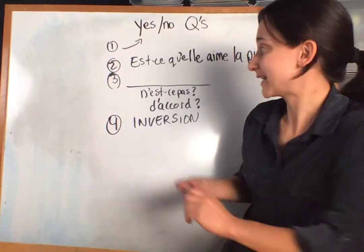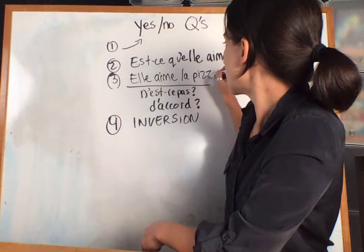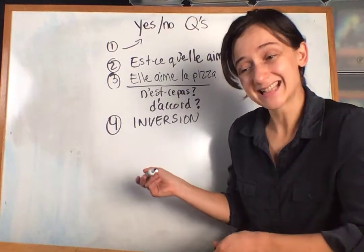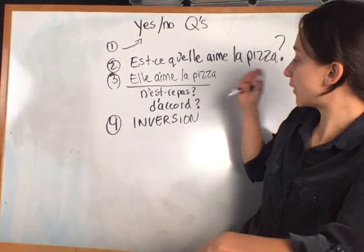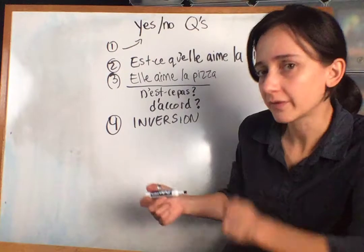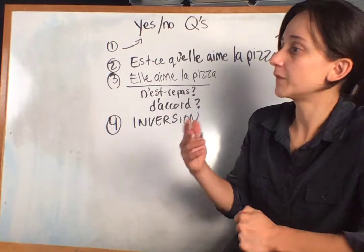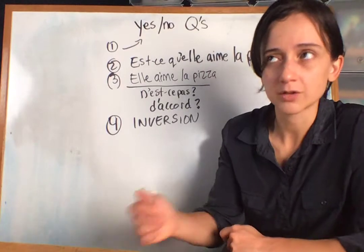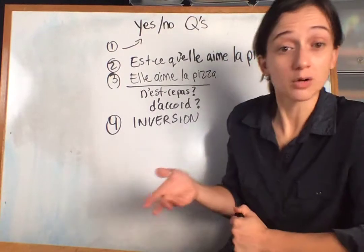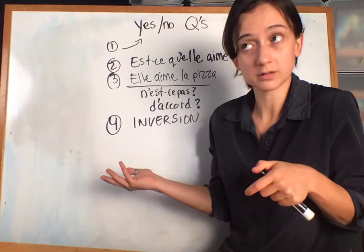The third way to make a question is to take that same statement 'Elle aime la pizza' and put 'n'est-ce pas' at the end, which is like saying 'isn't it?' or 'right?' We could also put 'd'accord,' which literally means 'okay.' D'accord depends on context — it wouldn't work for 'she likes pizza, okay?' But if you were saying 'let's go to the park, okay?' — d'accord — that works.